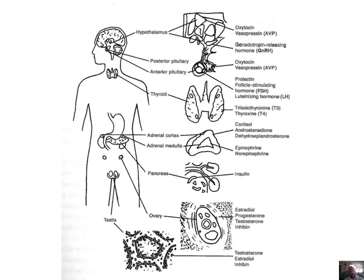The pancreas — a cross-section shows it produces insulin. Also note that glucagon comes from there as well. Then we have the ovary, which produces estrogens and progesterone — estradiol is estrogen — and testosterone-inhibin, which stops the production of testosterone so you don't develop male features. Whereas the testes produce testosterone and estradiol-inhibin, stopping too much estrogen from being produced, which would cause a man to have very feminine qualities.